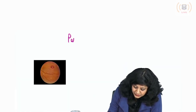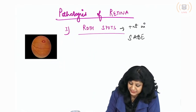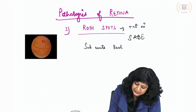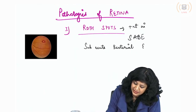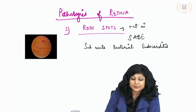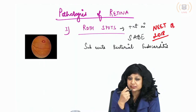We will see the pathologies. These Roth spots are present in subacute bacterial endocarditis. This is a question that was asked in NEET 2018.